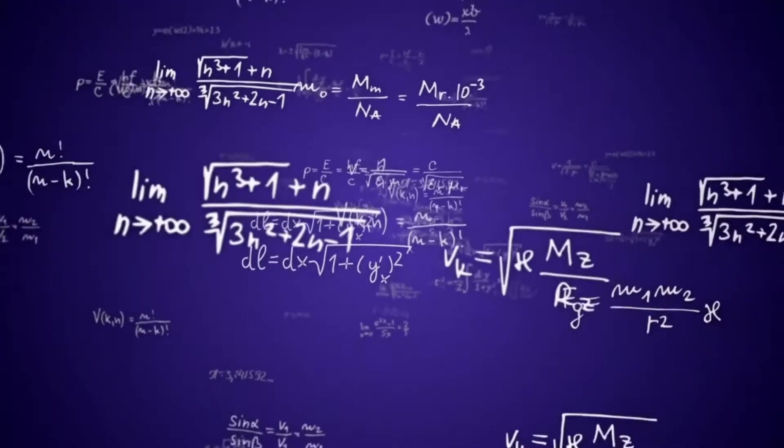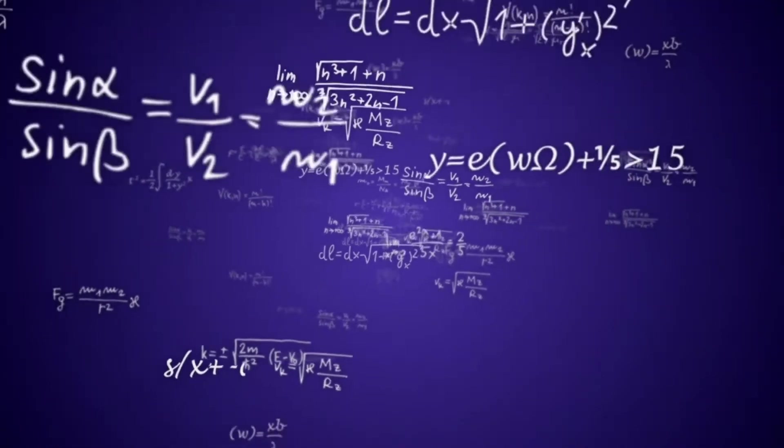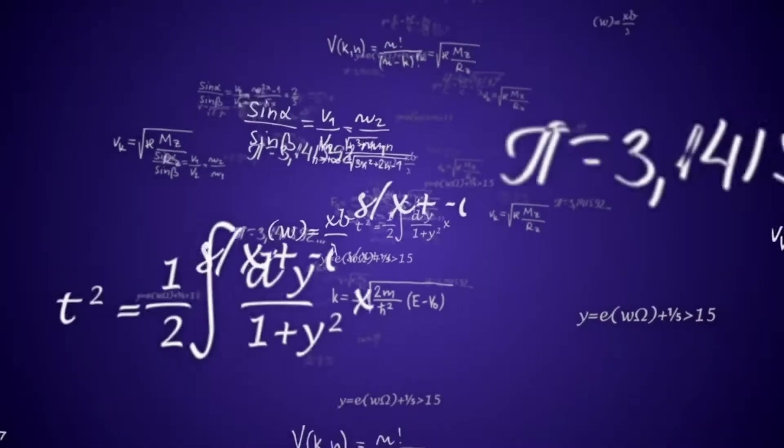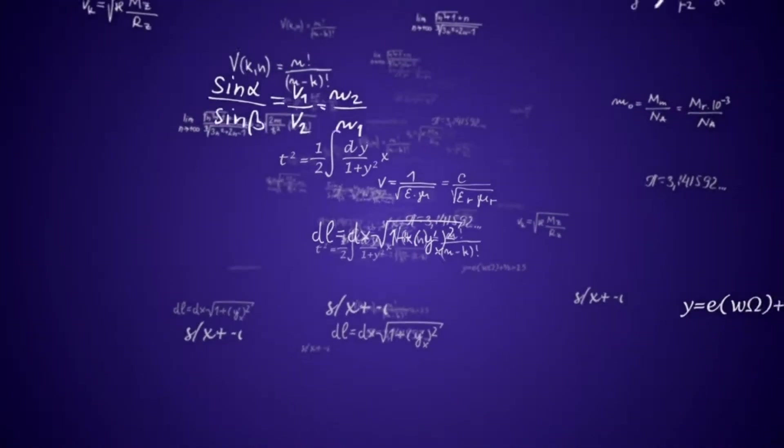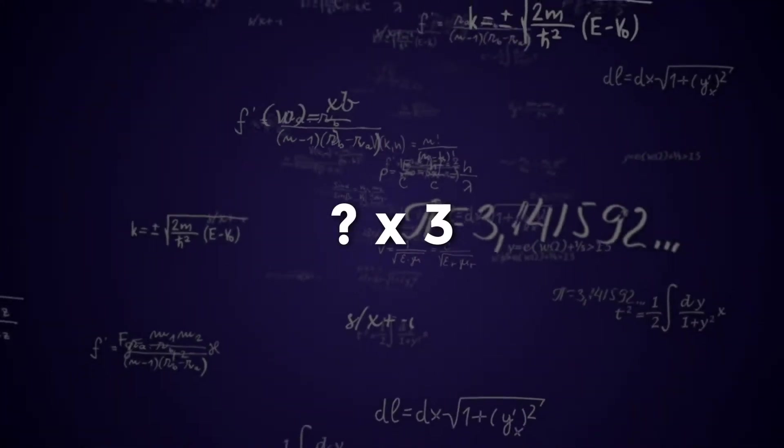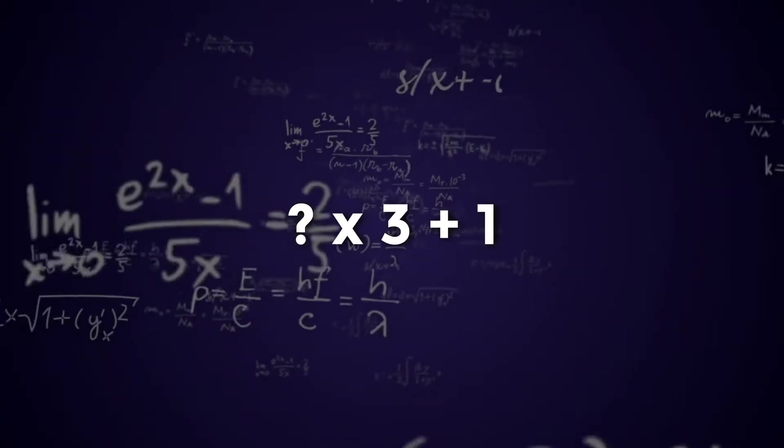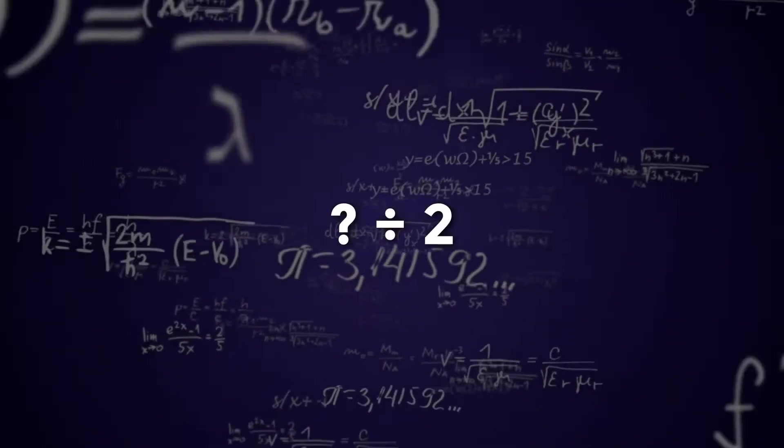If you would also like to give it a go, this is what the simplest problem in the world is. Pick any whole numbers and apply these two rules to them. If the number is odd, you multiply it by 3 and add 1. If the number is even, you divide it by 2.